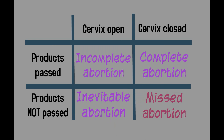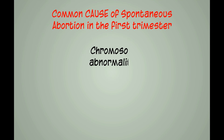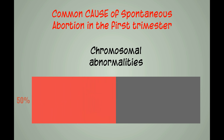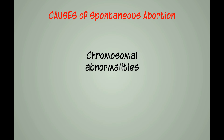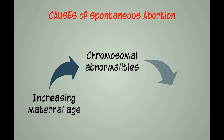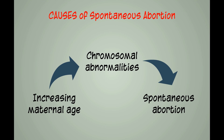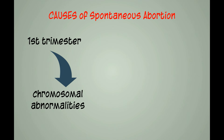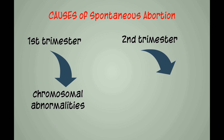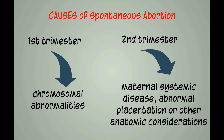The most common cause of spontaneous abortion in the first trimester is chromosomal abnormalities. Fifty percent of recognized early spontaneous abortions are attributed to chromosomal abnormalities, most of which are trisomies. Increasing maternal age will thus increase the risk of chromosomal abnormalities and therefore the risk of spontaneous abortion. Compared to first trimester abortions, second trimester abortions are less likely to be caused by chromosomal abnormalities and can be caused by maternal systemic disease, abnormal placentation, or other anatomic considerations.